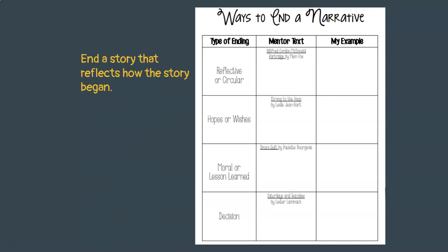We talked about reflective or circular, meaning you end a story that reflects how the story began. It's kind of like a circular motion where the story goes in a circle — the way it started is the way it ends.